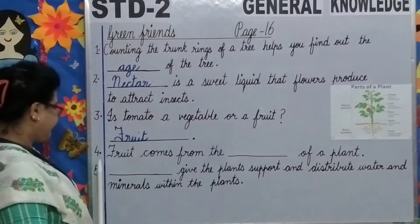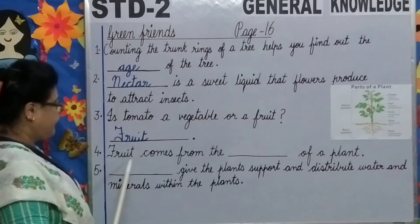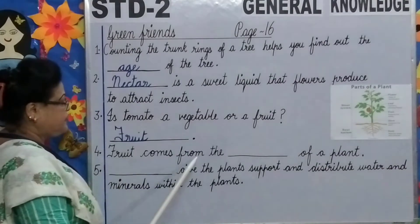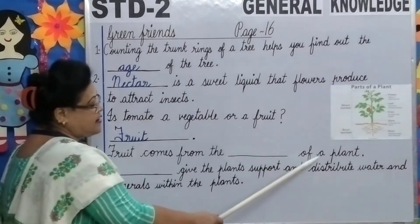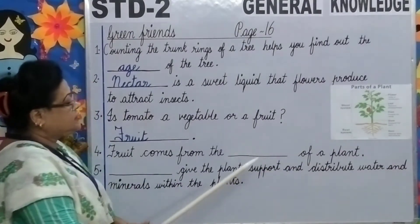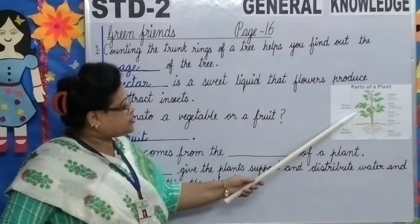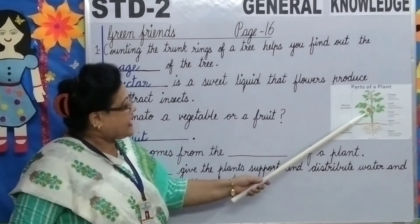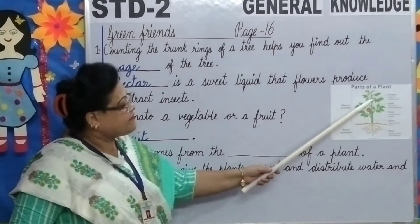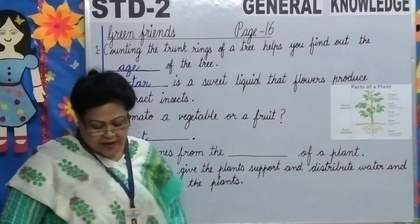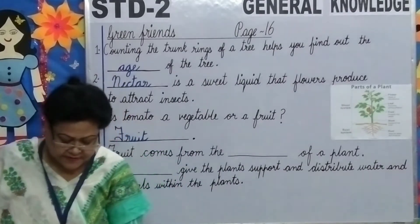Number 4: Fruit comes from the blank of a plant. Look at this picture, children. Can you see the fruit? It comes from the flowers of a plant.